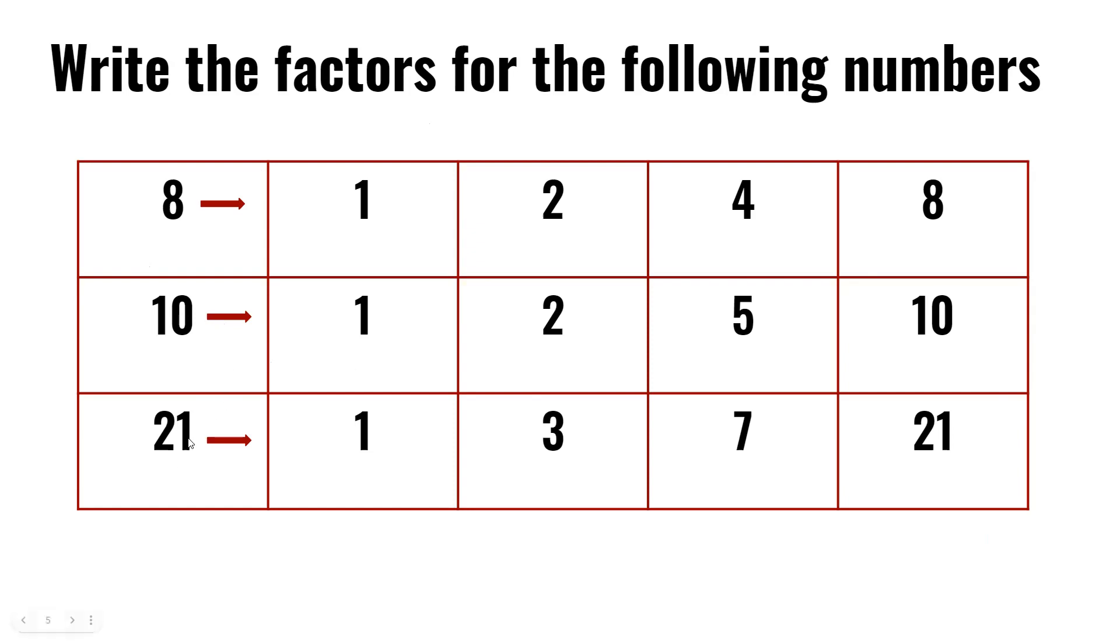Last but not least, we have 21. We know 1 times 21 is 21, and 3 times 7 is 21. So 1, 3, 7, and 21 are the factors of 21.